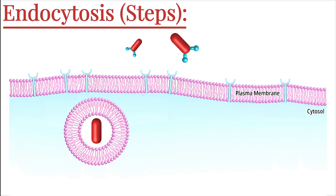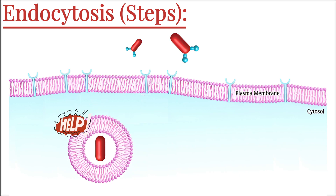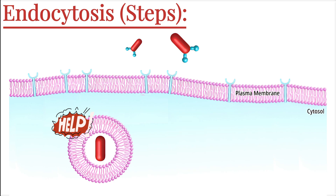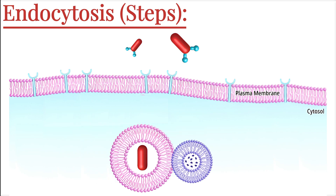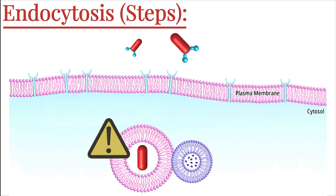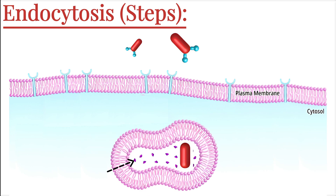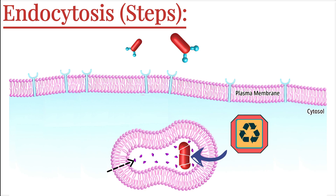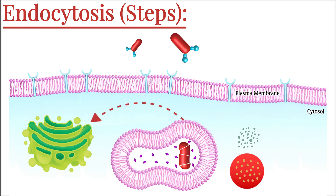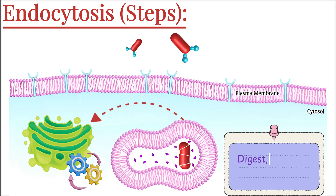Once the vesicle is formed, it moves deeper into the cytoplasm. The cell has a proper transport and sorting system inside. This vesicle fuses with an organelle called the early endosome, which acts like a sorting center. Here, the contents of the vesicle are checked and directed to where they need to go. If the material is harmful or no longer needed, the vesicle may be sent to a lysosome, where powerful enzymes break it down into simpler molecules the cell can reuse. If the contents are useful, like nutrients or signaling molecules, they can be sent to the Golgi apparatus or other parts of the cell for further processing. So in this step, the cell decides whether to digest, store, or use the material — like a smart system managing incoming deliveries.